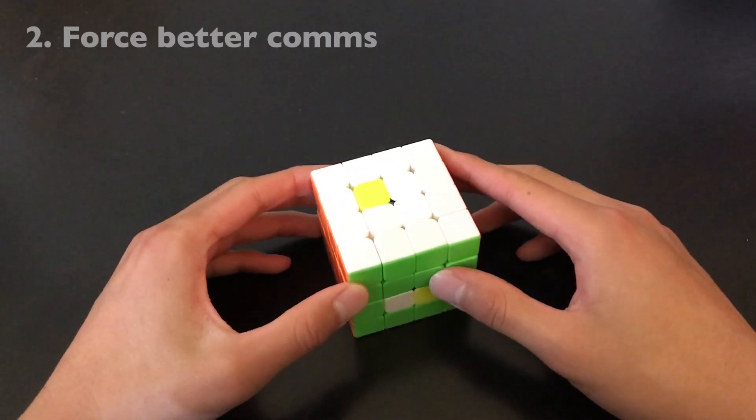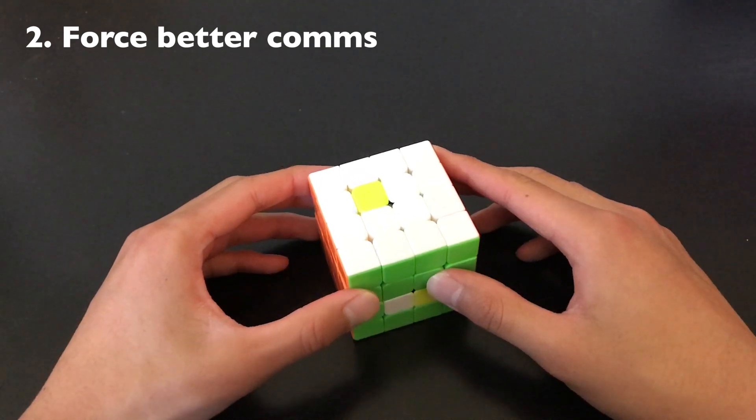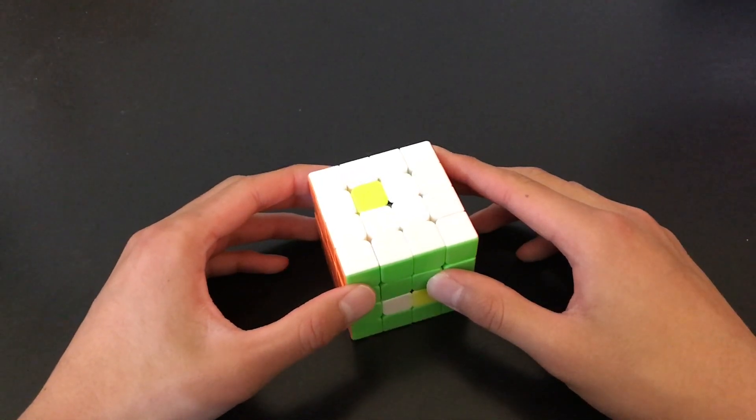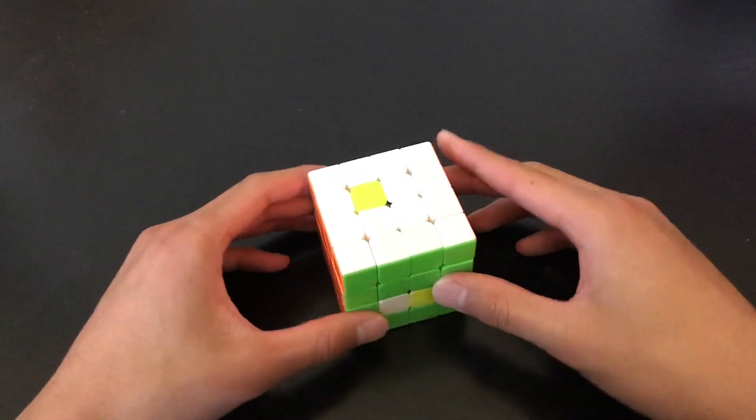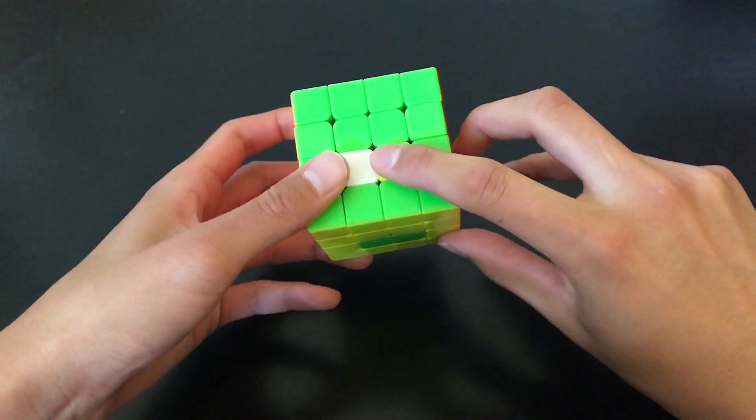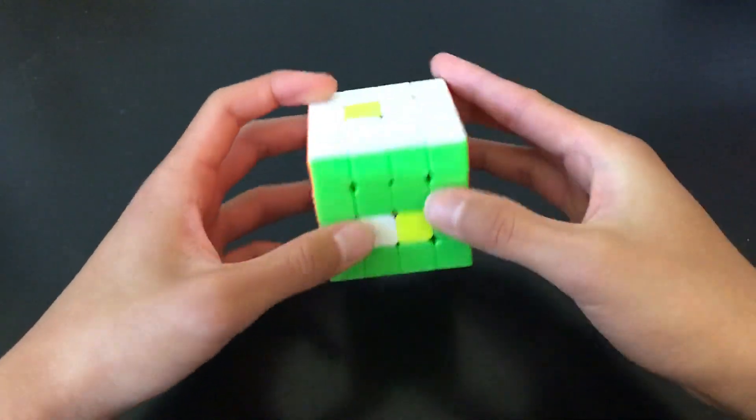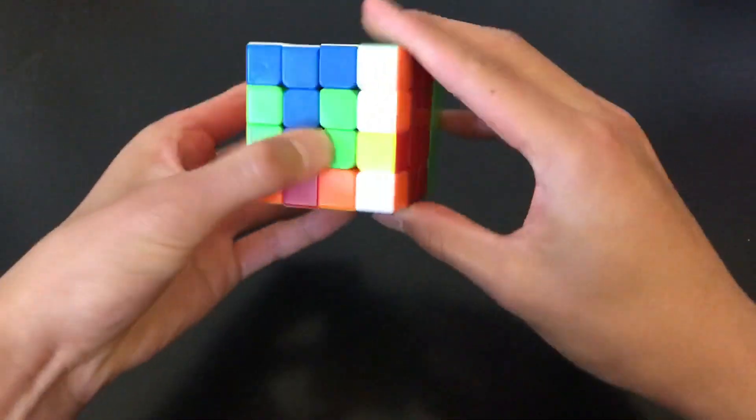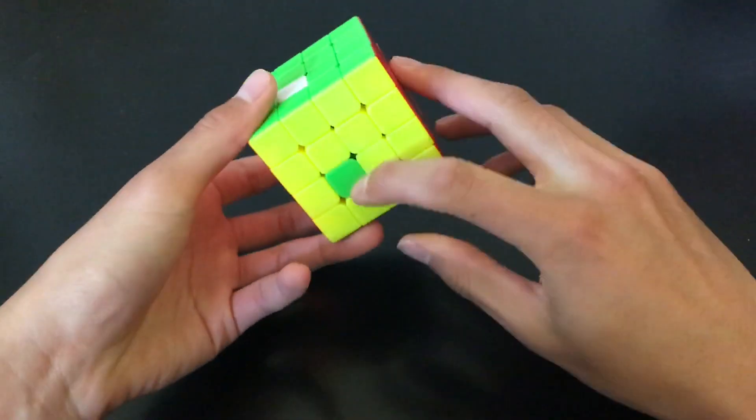Another reason to shoot to centers out of order is to force better comms. This is a more advanced technique and doesn't save as much time. Let's take a look at this scramble. If we shoot to centers in order, this sticker will go here, and then here, and then here, and then here. Next will be here and here.